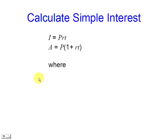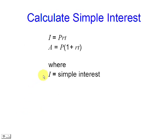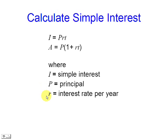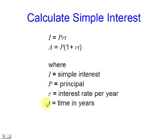These are the formulas to be used, where I is the simple interest, P is the principal, R is the interest rate per year, T is the time in years, and A is the amount.